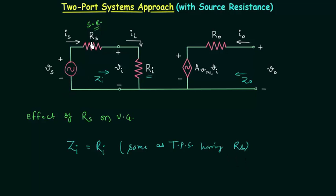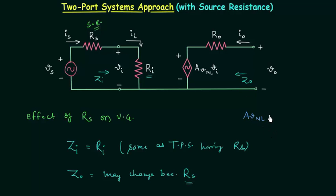There is no source resistance RS present in the previous case. The output impedance may change because of source resistance RS. If we talk about the voltage gain under the no-load condition, AVNL, it will also remain the same as the two-port system having only the load resistance. These are three important points that you must know.